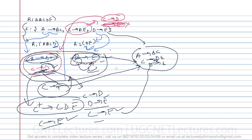You can try some previous year questions on this. Now we will move on to normalization. Normalization is a process of dividing tables into a smaller number of tables so that we can achieve minimum redundancy. We will see how a relation can be unnormalized, 1NF, 2NF, 3NF, 4NF, 5NF, and BCNF. For GATE and UGC NET, questions are only asked on 1NF, 2NF, and 3NF, so 4NF and 5NF are not required for those exams.